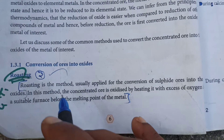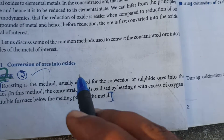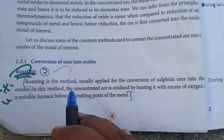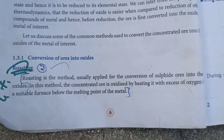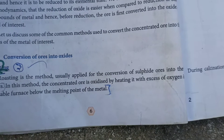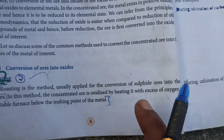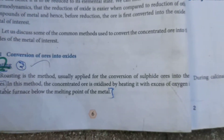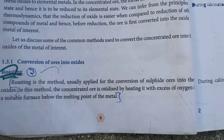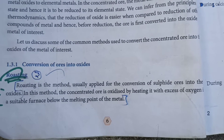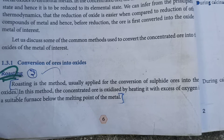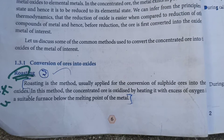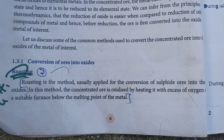Roasting is the method usefully applied for the conversion of sulfide ores into oxides. In this method, the concentrated ore is oxidized by heating it with excess oxygen in a suitable furnace below the melting point of the metal.